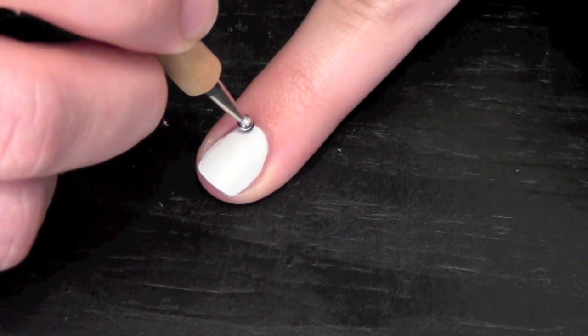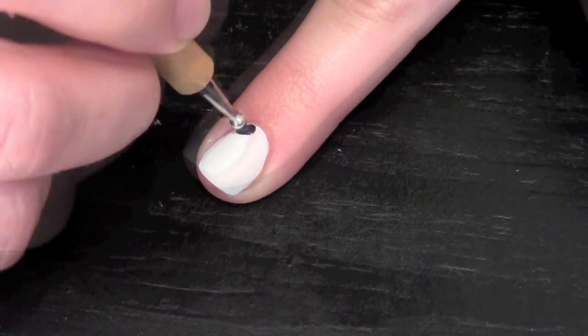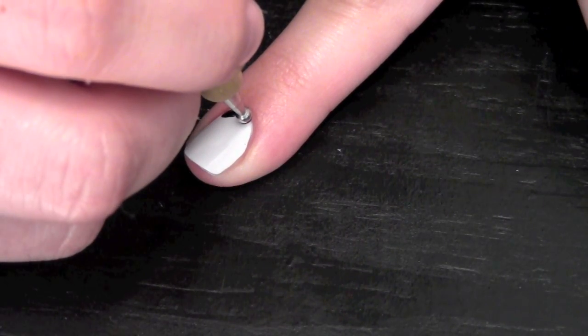With a large dotting tool, create the contours of the panda bear's face by starting with his ears.